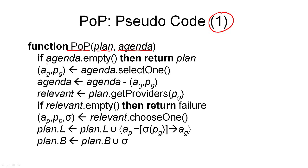The algorithm begins by testing whether the agenda is empty. If there are no more unsatisfied preconditions, that means our plan contains no more flaws, so it is a solution plan and we can return it. However, if there are still items on the agenda, we need to select one as the flaw to work on next. This selection is a deterministic choice point, meaning we don't need to backtrack over it — the reason being that we need to work on all agenda items eventually, and it is only important for efficiency in which order we do that, not for completeness.